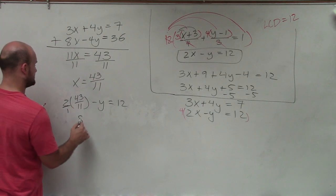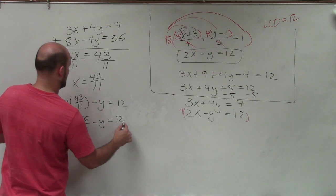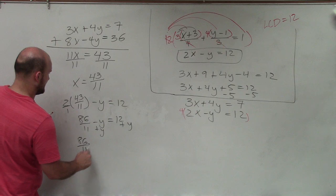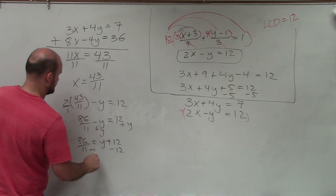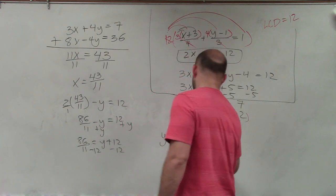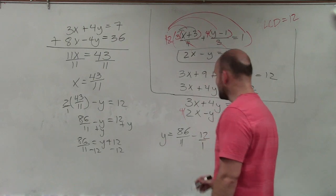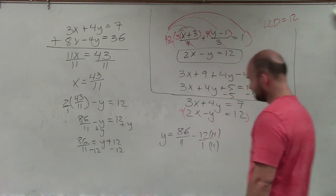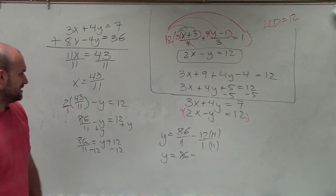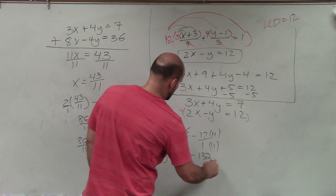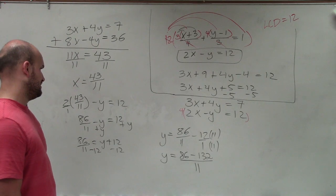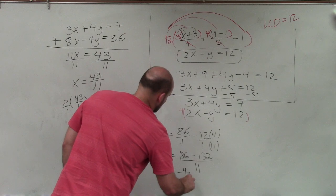2 over 1 times 43 over 11 becomes 86 over 11, so 86 over 11 minus y equals 12. Then I'll add y to both sides: 86 over 11 equals y plus 12. Subtract 12 from both sides, so y equals 86 over 11 minus 12. To get a common denominator, I multiply 12 by 11 over 11, giving me 132 over 11. So y equals 86 minus 132 over 11, which is negative 46 over 11.